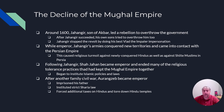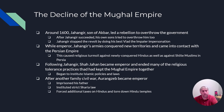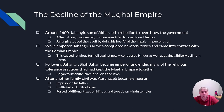Shah Jahan's sons fight each other when they think their father is on his deathbed. Three of the four sons die, and the surviving son Aurangzeb becomes the leader of the Mughal Empire. Ironically, Shah Jahan recovers, and Aurangzeb has no choice but to throw his own father in prison — Shah Jahan remains his son's prisoner for the next five years until he finally passes away.